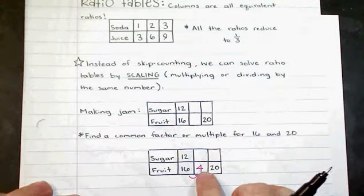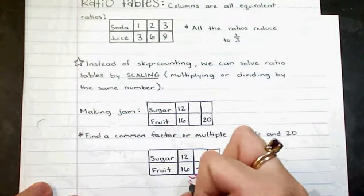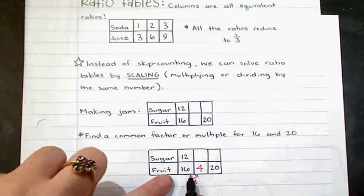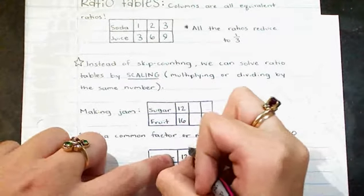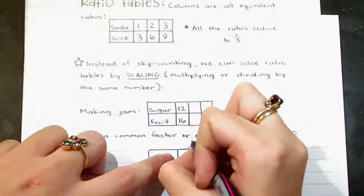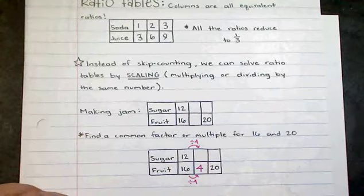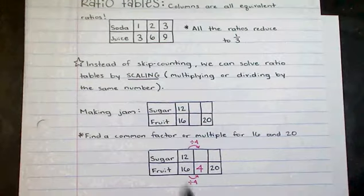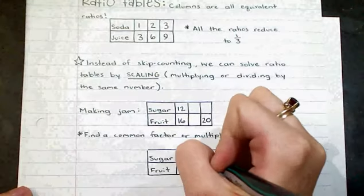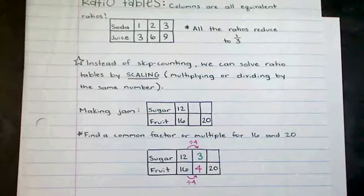So I can put 4 in this middle box, which means to get from 16 to 4, remember if I just look at this as a fraction. So to get from 16 to 4, I would divide by 4. And if I divide by 4 in my denominators, I need to divide by 4 in my numerators. So the result of this would be 12 divided by 4 is 3.